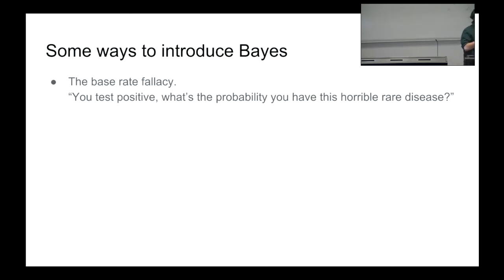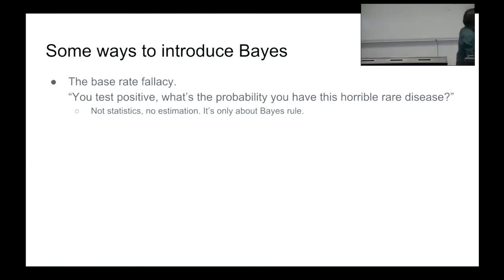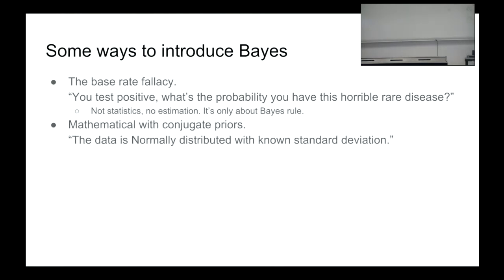This is how Bayesian statistics is often introduced, but I don't think it's very good. You're just doing a t-test and suddenly you're doing this instead, and it's hard to see the similarities. There's no estimation — it's actually only about Bayes' rule. After this introduction you're none the wiser about what this has to do with statistical estimation.